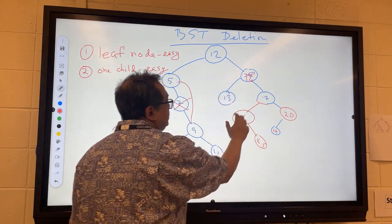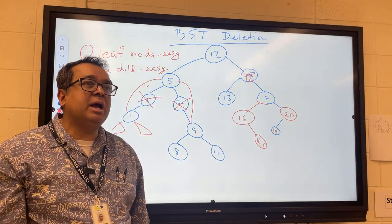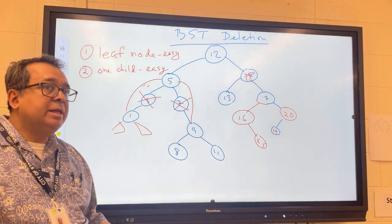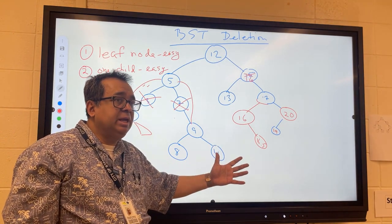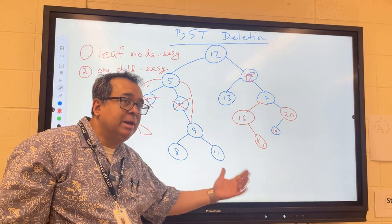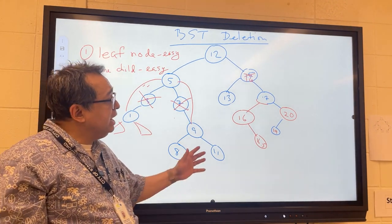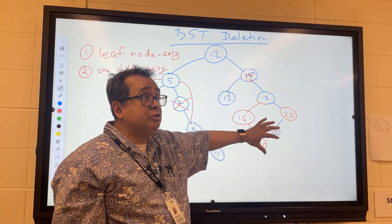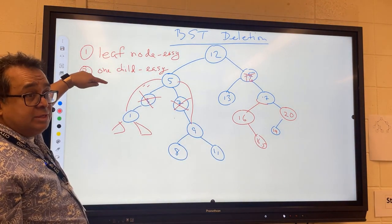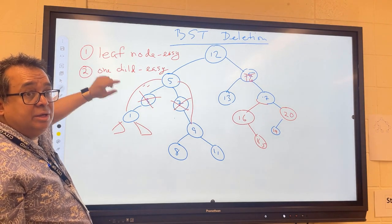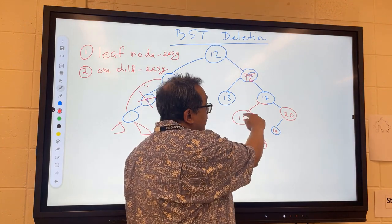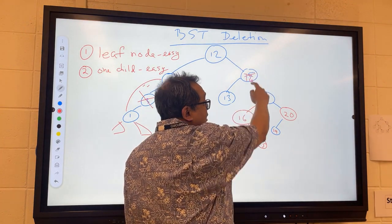Now question: what would I do if the 16 had two children? Would I be stuck? Think about that now for a second. The minimum of a right subtree cannot have a left child, then it wouldn't be minimum anymore. So therefore, when I select the minimum of the right subtree, it either has no children or it has one child only. So the technique here is to find the minimum, copy it into the node you want to delete, and then do one of these two things here.